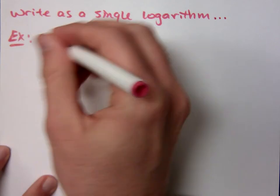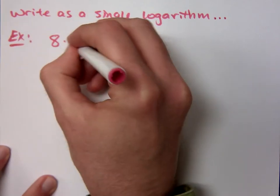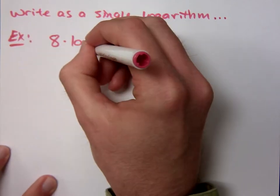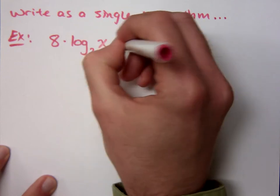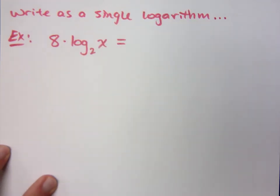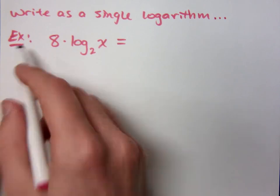For example, if I were to say 8 times log with a base 2 of x, how do you write that back as just one logarithm without the 8 out in front?